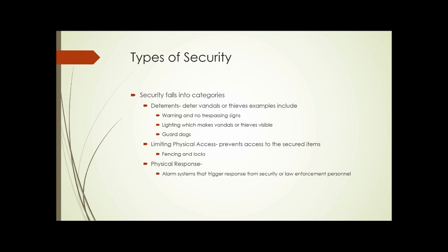So what are the types of security that we can employ? There are categories of security, starting with deterrence. As the name implies, these things deter vandals or thieves. Some examples are warning signs, no trespassing signs, lighting — which makes vandals and thieves visible — and guard dogs. You can also limit physical access, which typically involves fences, locks, and gates. Or you can have a physical response, which generally starts with an alarm system that triggers a response from security people or law enforcement personnel.